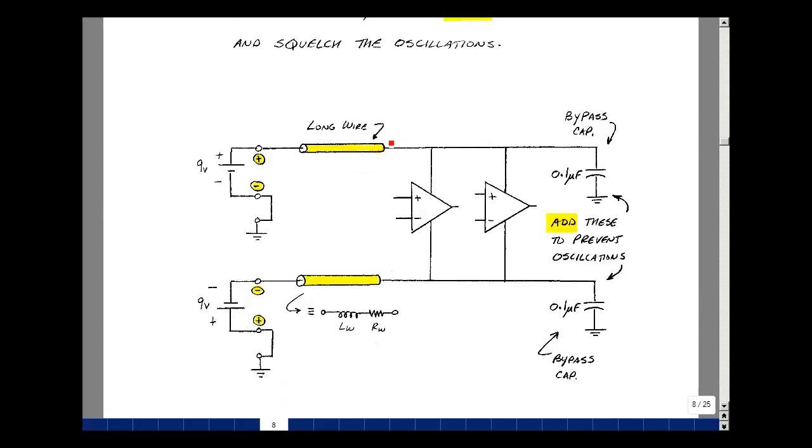Here I've got my power, and some wire between the power and my integrated circuit. This is particularly troublesome in automobiles with long cables. We're going to put a capacitor, about 0.1 microfarad, very close to the pins of the op-amp back to ground. This is going to squelch or suppress the oscillations.